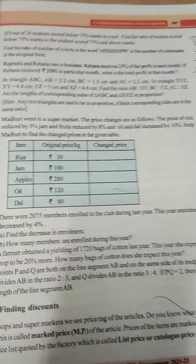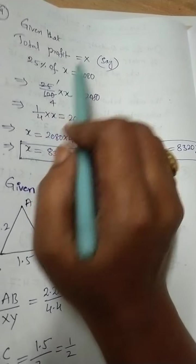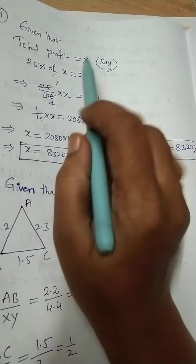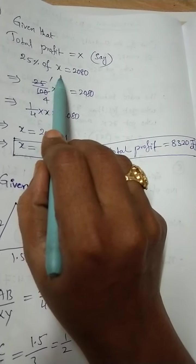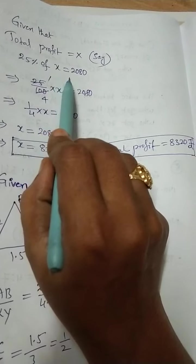For that, we don't know the total profit, so let us take X. Given that total profit X, let us take that one. That is an unknown value. Now 25% of X is equals to 2080 rupees.